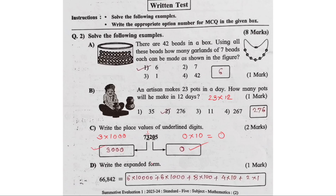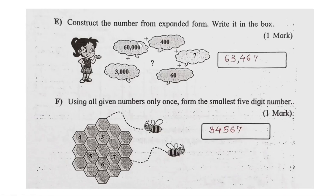The next question is: write the expanded form. Then consider the number from the expanded form. If you take the expanded form, the first number is 60,000, then 3,000, then 400, then 60, and 7. So, you will have 63,467.